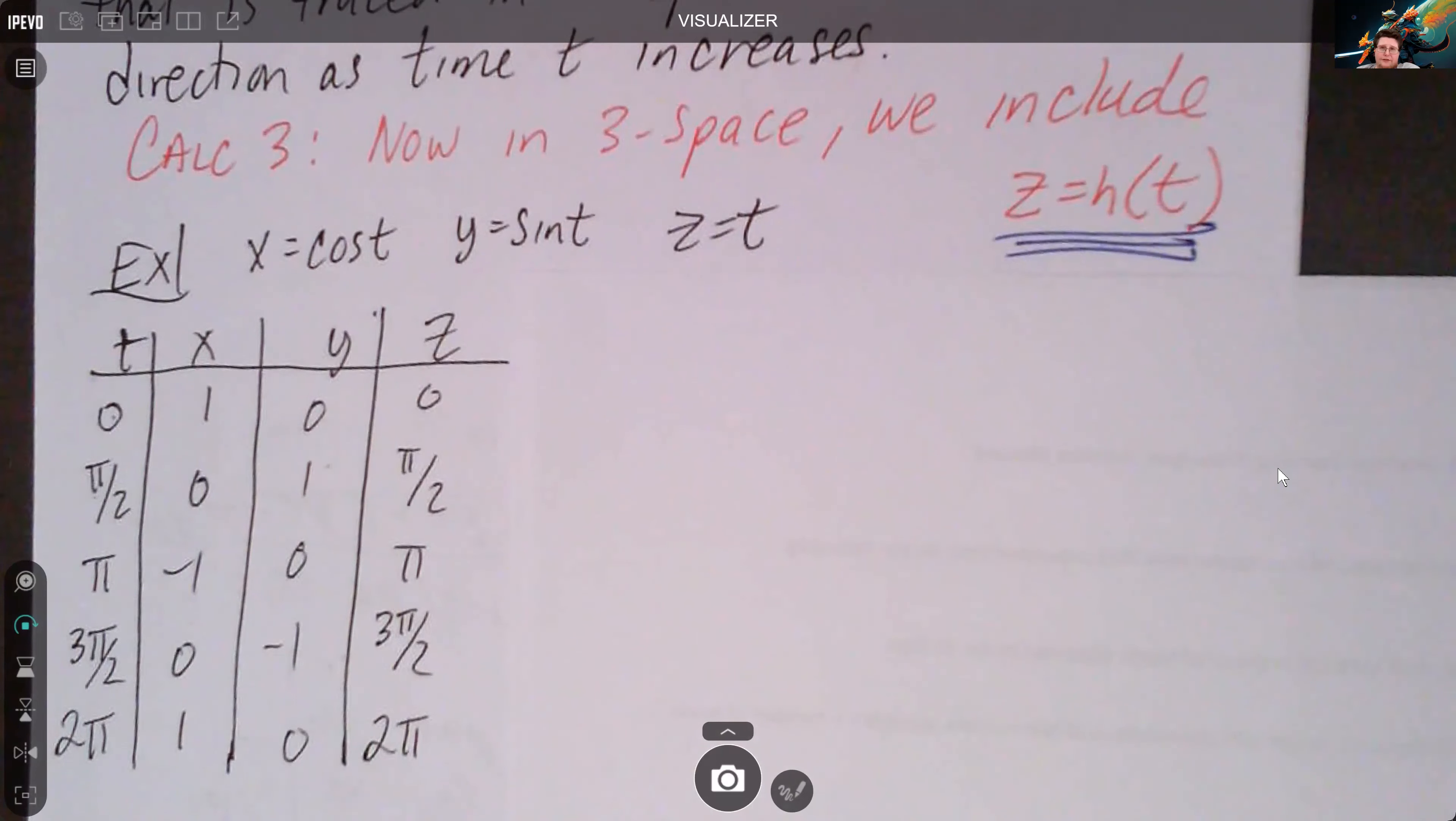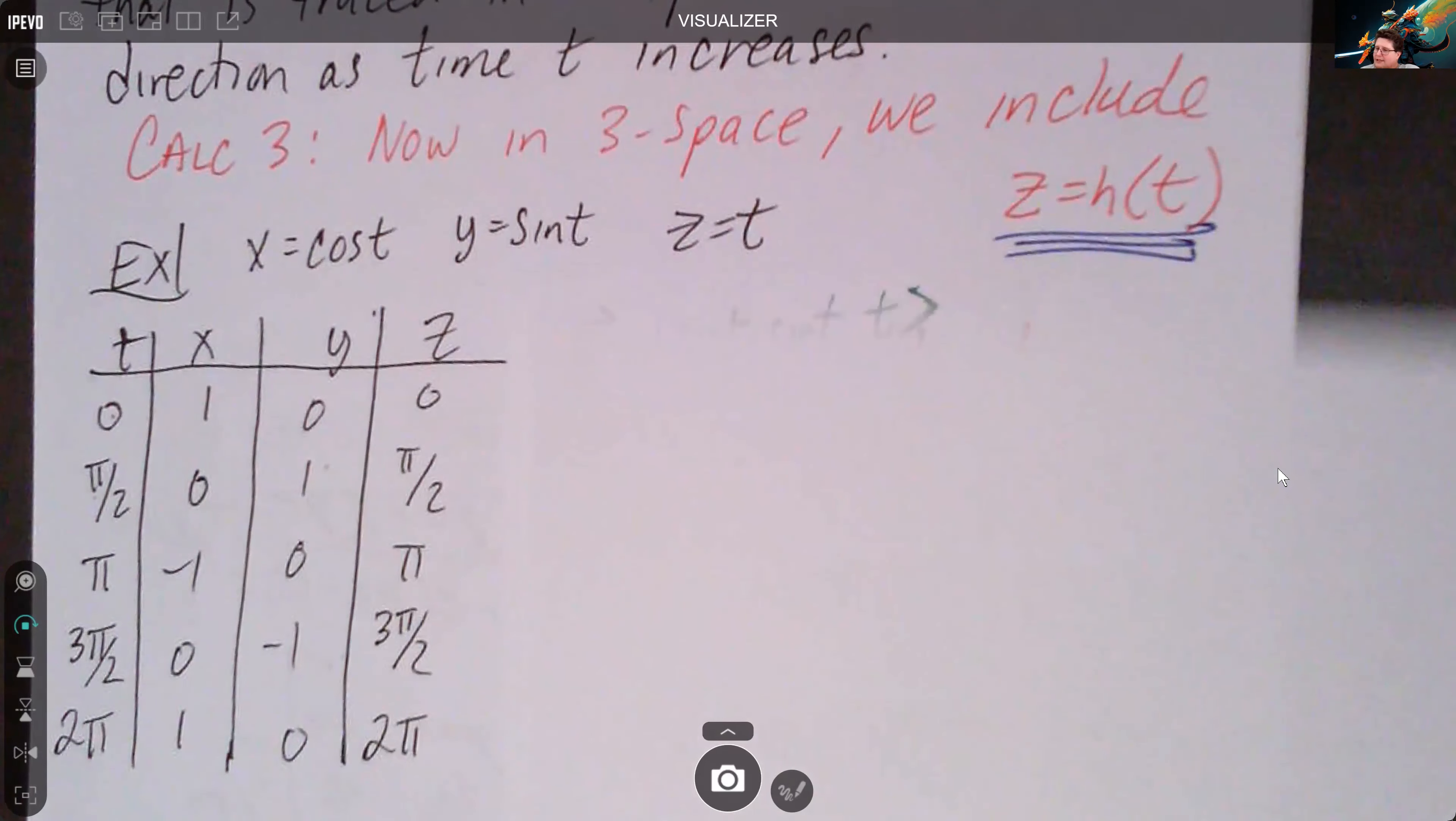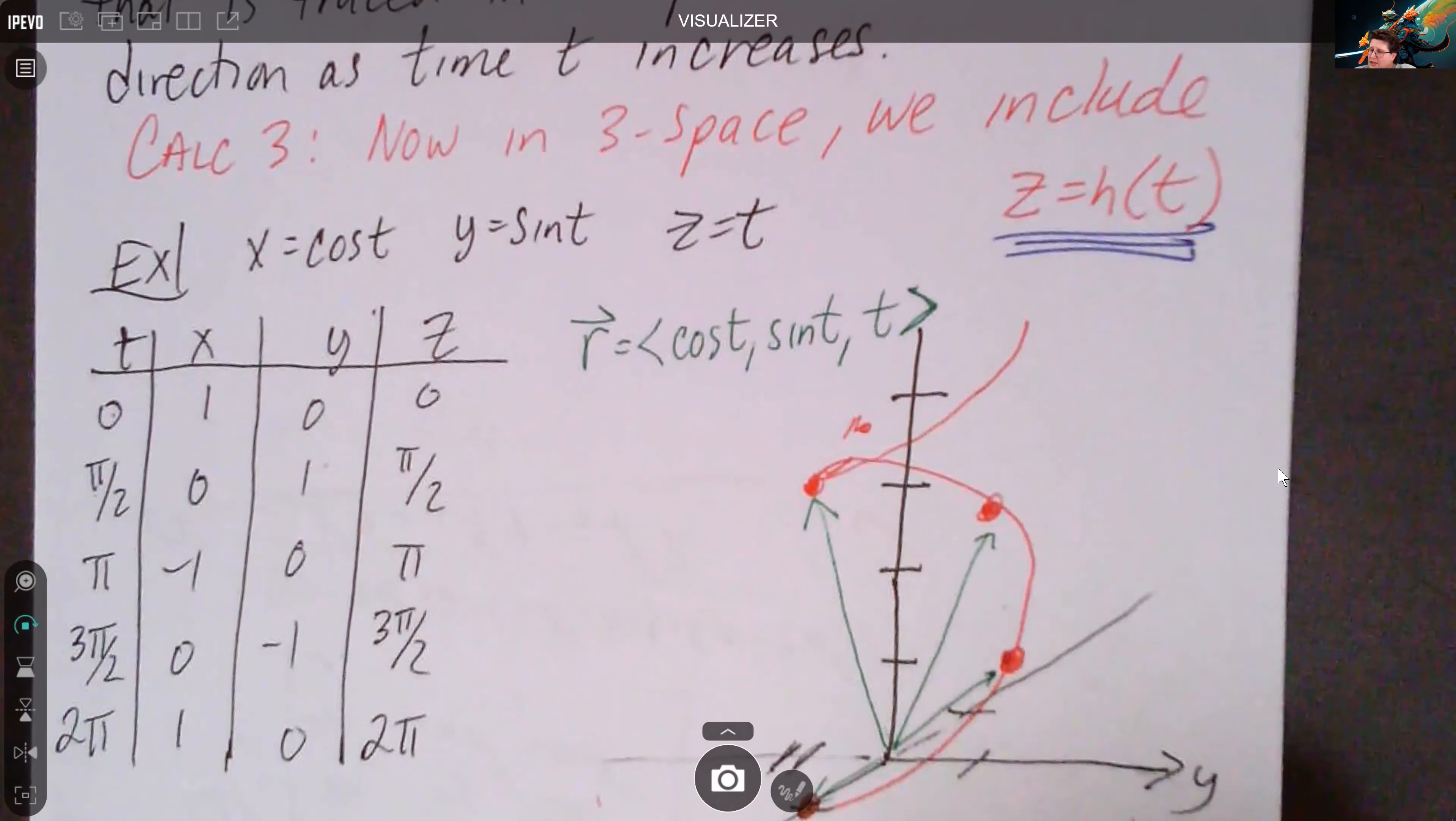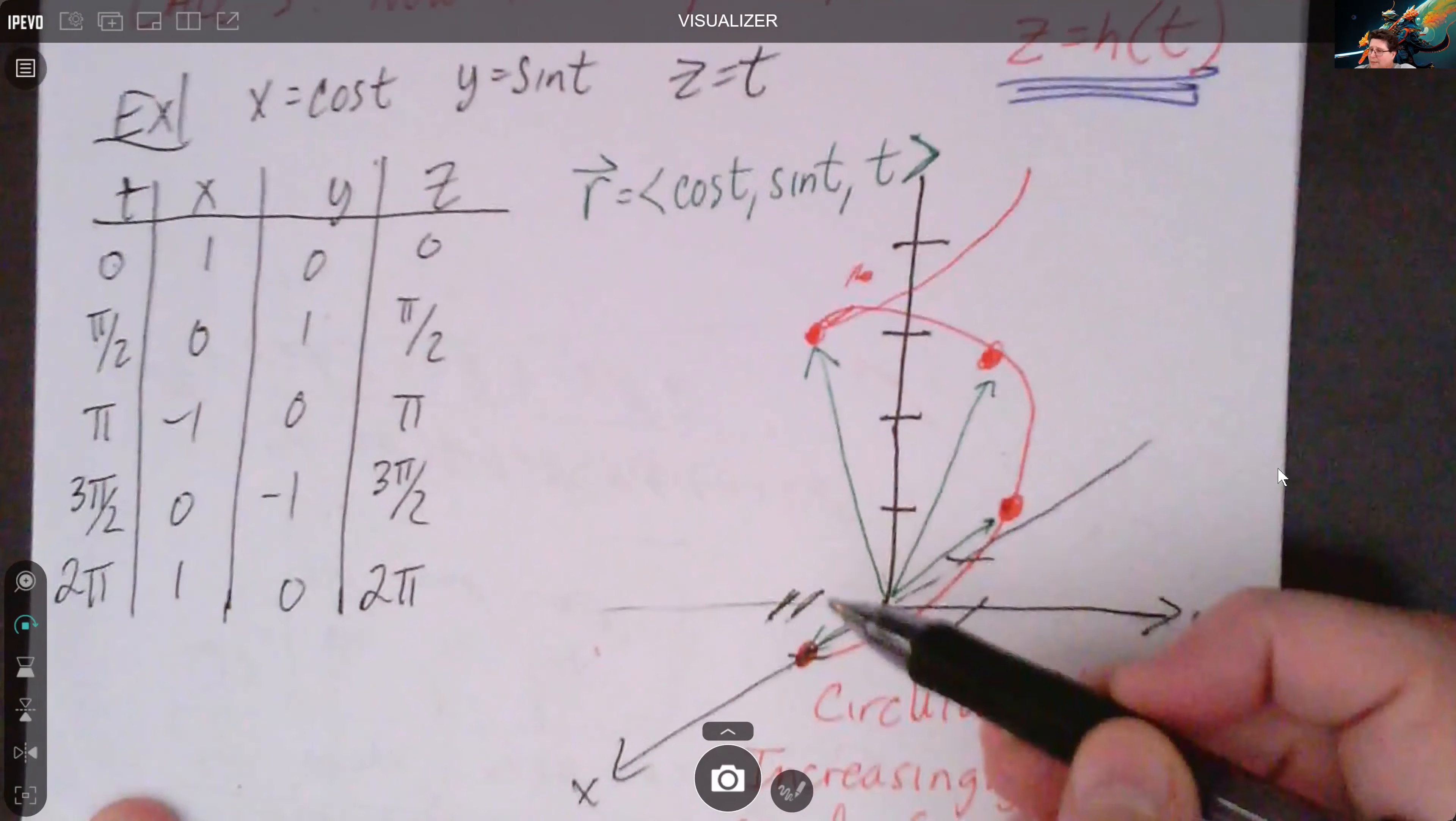If I make a quick table of values for it - since we're using cosine and sine, let's use the friendly trig values, all the multiples of pi over 2 going through the circle. We've got such, and if we sketch it, we're starting at the bottom and this is r of zero.